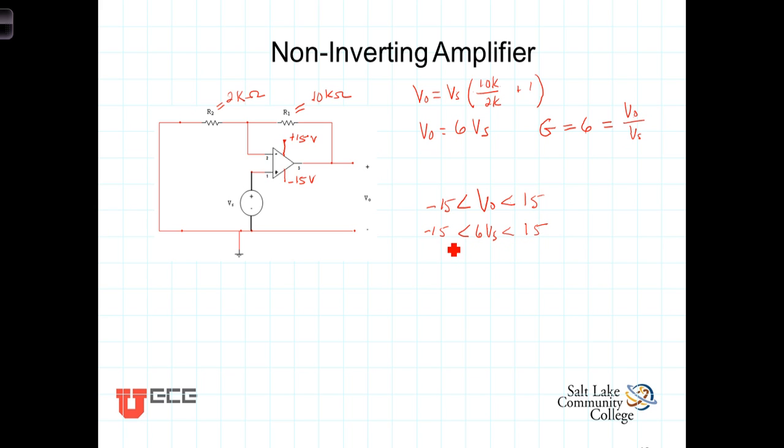Dividing both sides by the 6 so that we get V sub S by itself, we get V sub S must be greater than a negative 15 over 6, and it must be less than a positive 15 over 6. Or, V sub S is constrained to being greater than a negative 2.5 volts and less than a positive 2.5 volts.